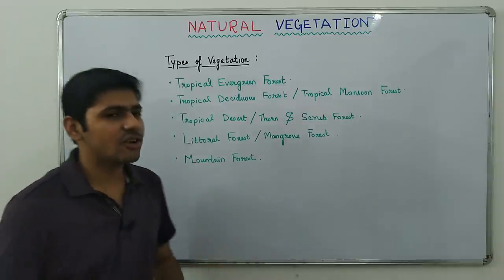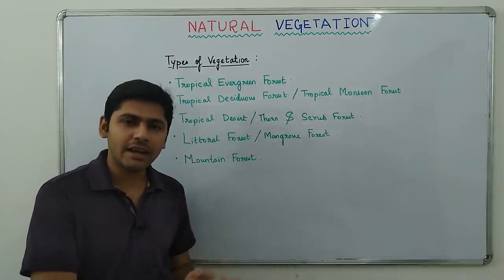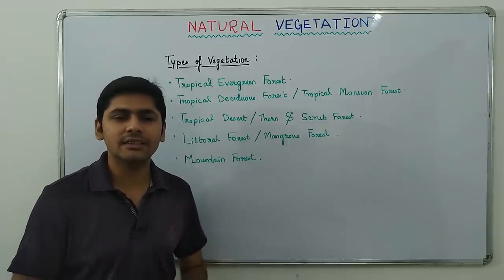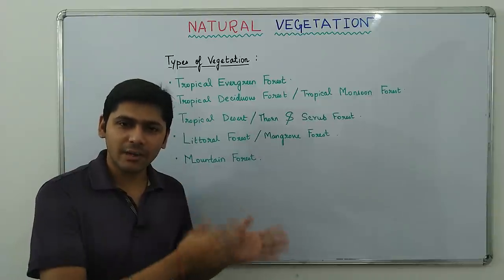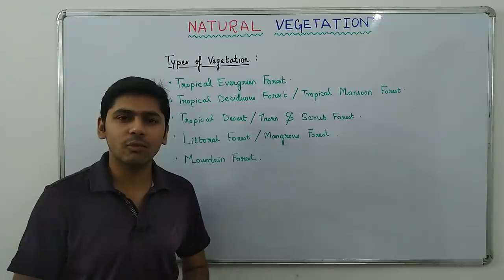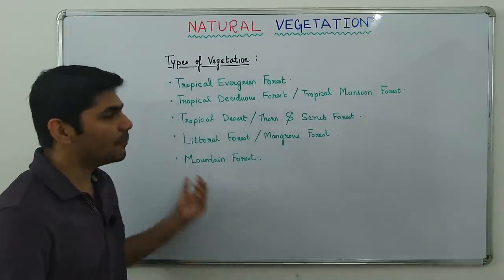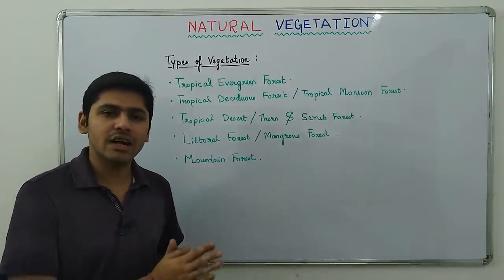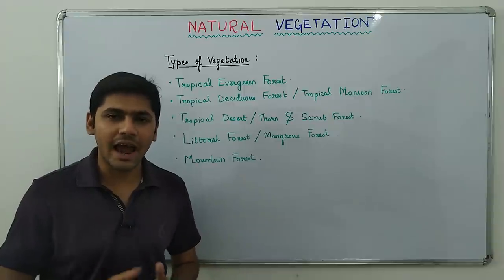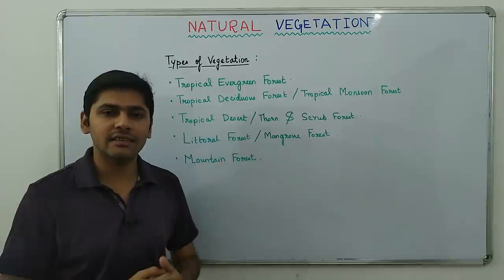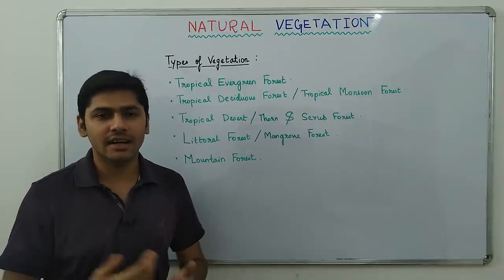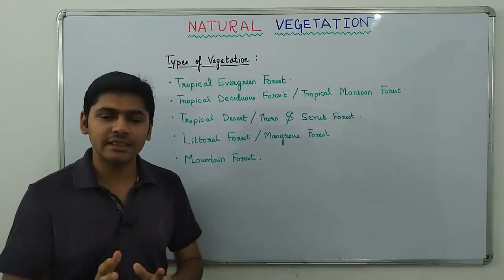Natural Vegetation. The plant community that grows naturally without the help of any humans is called natural vegetation — that basically means forests. In India, natural vegetations are found based on rainfall and relief. There are five types of natural vegetation found in India, and we also need to study the importance of forests and forest conservation.